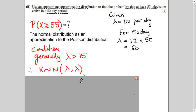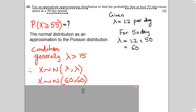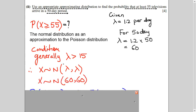Now we will see what my parameters will be. In normal distribution, this is your mu and this is your variance. Right now, lambda is your mu (mean) and lambda is your variance (sigma squared). So after writing this distribution with these parameters, now you will apply the continuity correction to the probability. The probability is p(X ≥ 55).